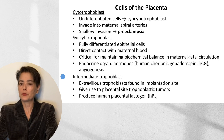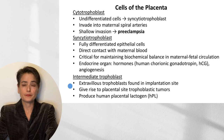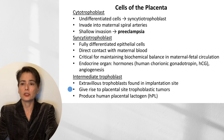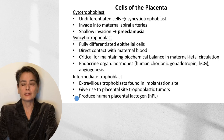The third type of trophoblast is intermediate trophoblasts, which are the extravillous trophoblasts found at the implantation site. These can give rise to placental site trophoblastic tumors, and while they can release a small amount of human chorionic gonadotropin, they do produce human placental lactogen, or HPL, which can be a useful diagnostic marker.